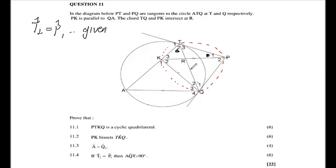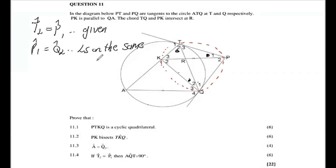Since PTKQ is a cyclic quad, chord KT subtends angle P1 and also angle Q2 on the same segment, so P1 equals Q2 by angles on the same segment. Since T2 equals P1 and Q2 equals P1, both T2 and Q2 equal P1, so we conclude T2 equals Q2.